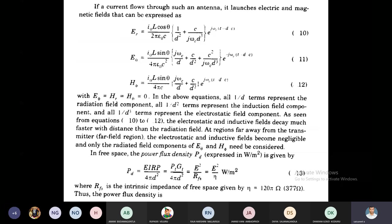Now we are calculating power flux density, that is pd, in terms of watts per meter squared. The power flux density which is equal to EIRP divided by 4πD².